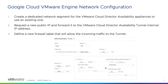You can check the available reference architecture for more information about the connectivity and ports used by the VMware Cloud Director availability appliances. Then a new public IP should be requested from the Google Cloud VMware Engine console. It needs to be forwarded to the internal IP address of the tunnel.